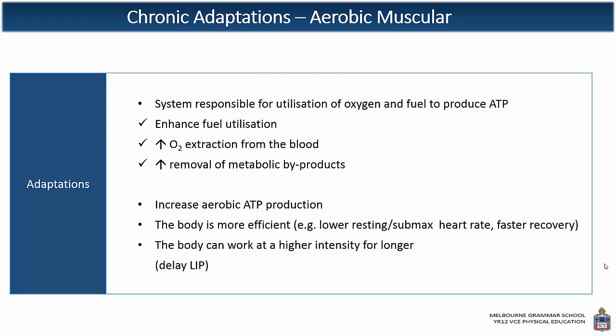Adaptations also occur to increase the oxygen extraction from the blood. Myoglobin, which is responsible for taking oxygen from the blood — delivered to the muscles via red blood cells or haemoglobin — increases in number, meaning you're going to have an increased ability to extract oxygen from the blood. Tied in with this is capillarisation: with more capillaries to the muscle site, you're going to have a greater opportunity for diffusion, and those myoglobin are going to be able to extract more efficiently. We're also going to have an increase in removal of metabolic byproducts so they can be taken back to the core of the body for central processing.